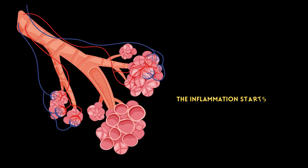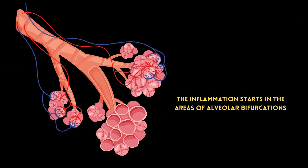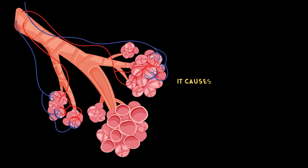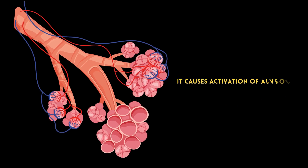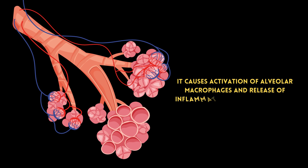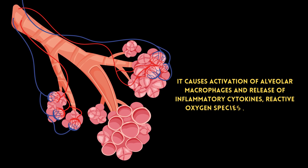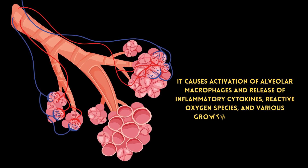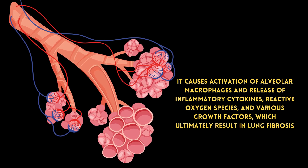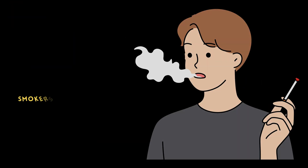The inflammation starts in the areas of alveolar bifurcations. It causes activation of alveolar macrophages and release of inflammatory cytokines, reactive oxygen species, and various growth factors, which ultimately result in lung fibrosis.